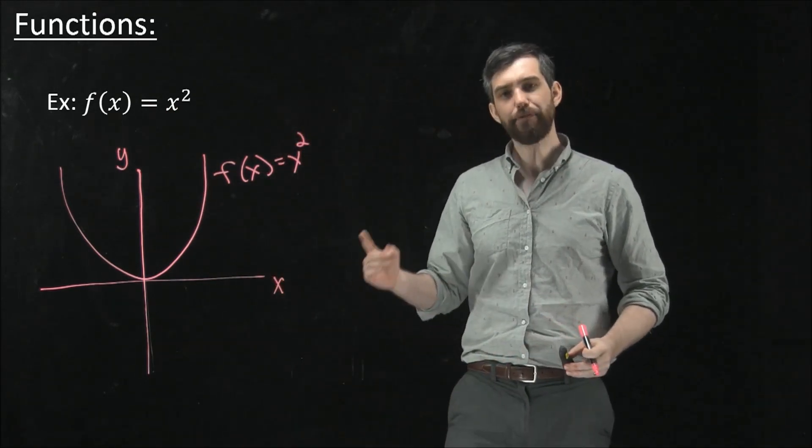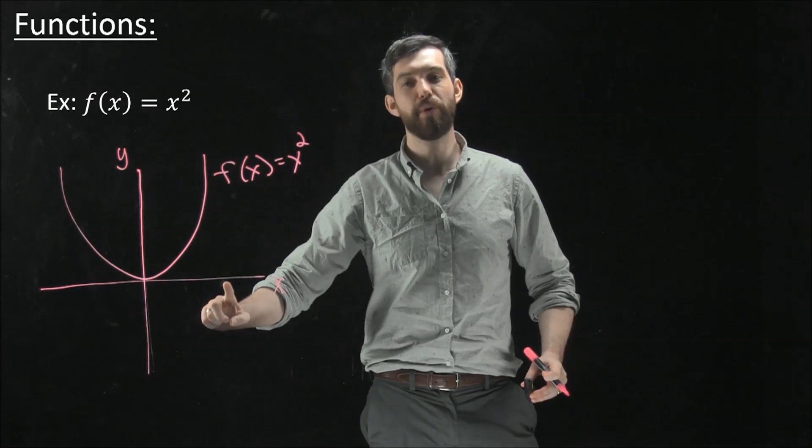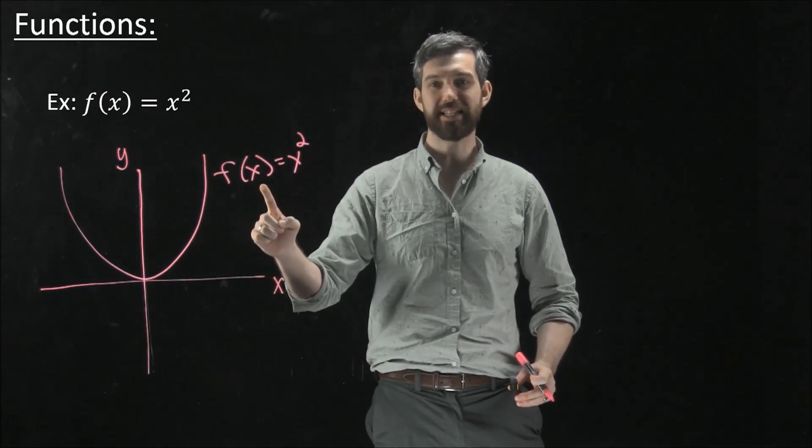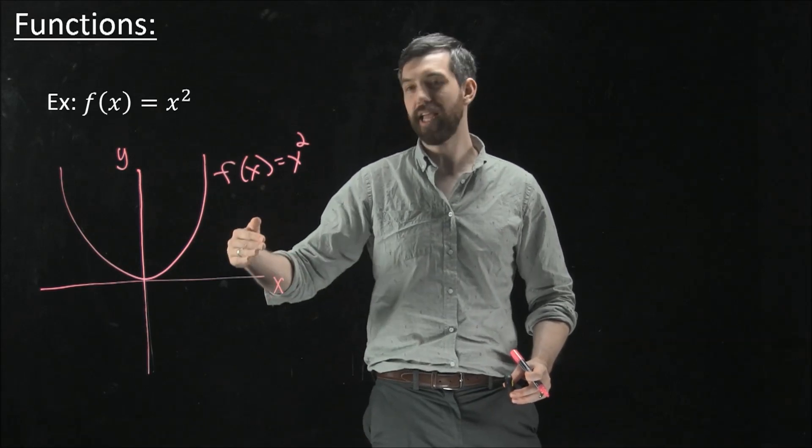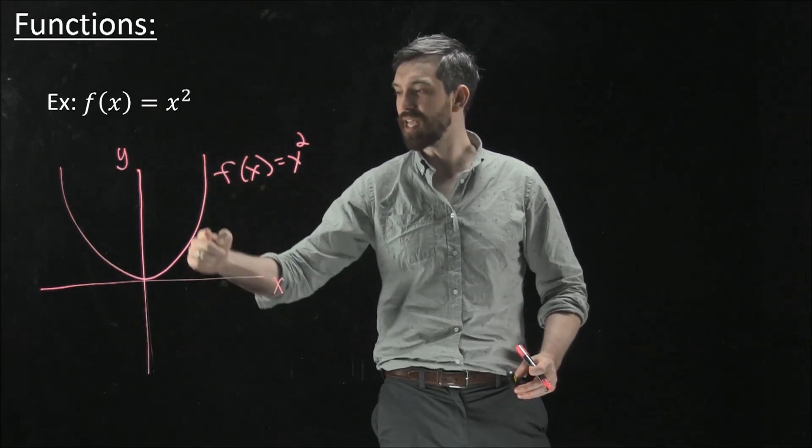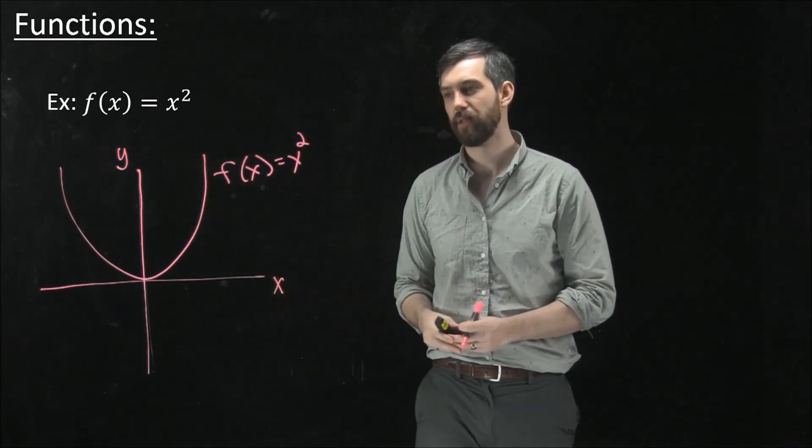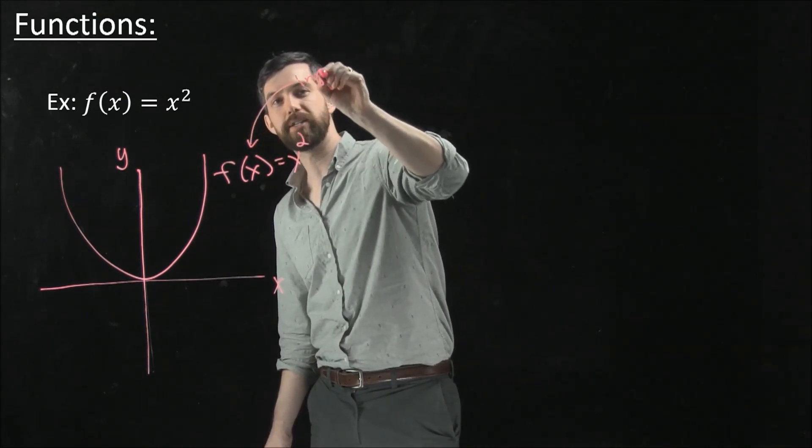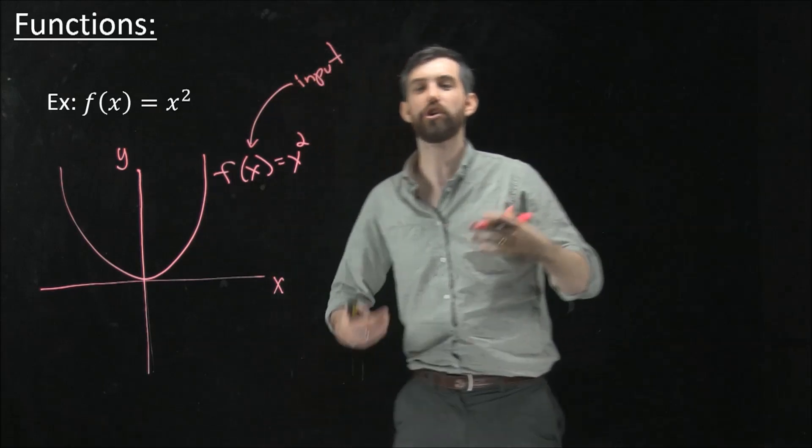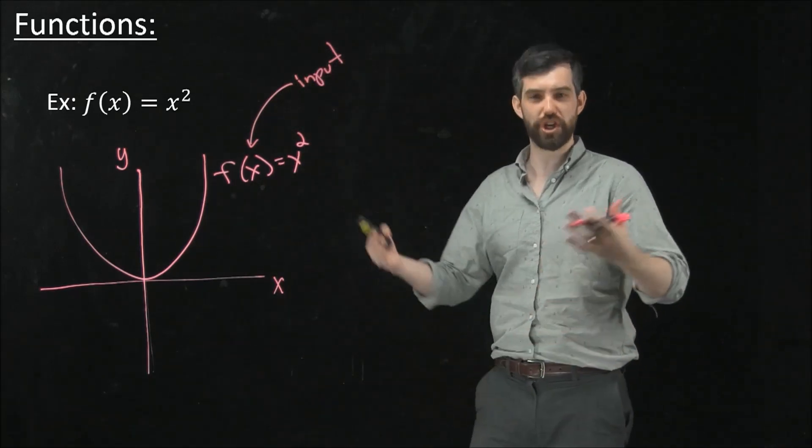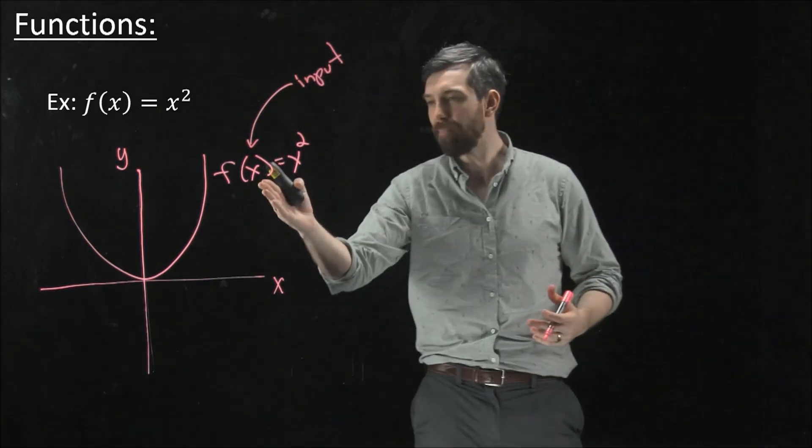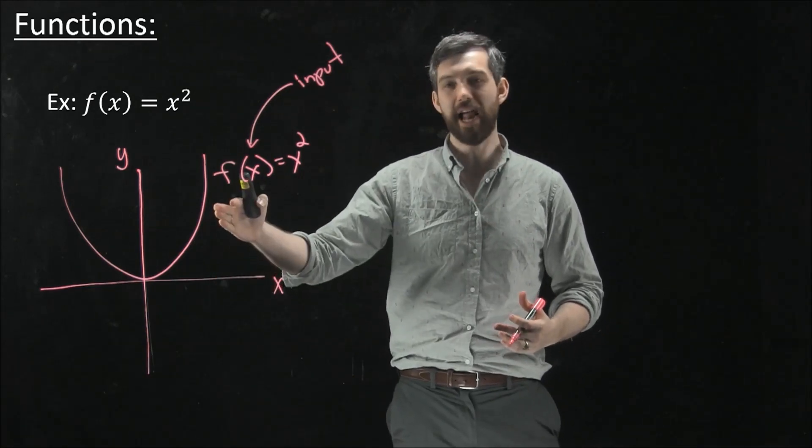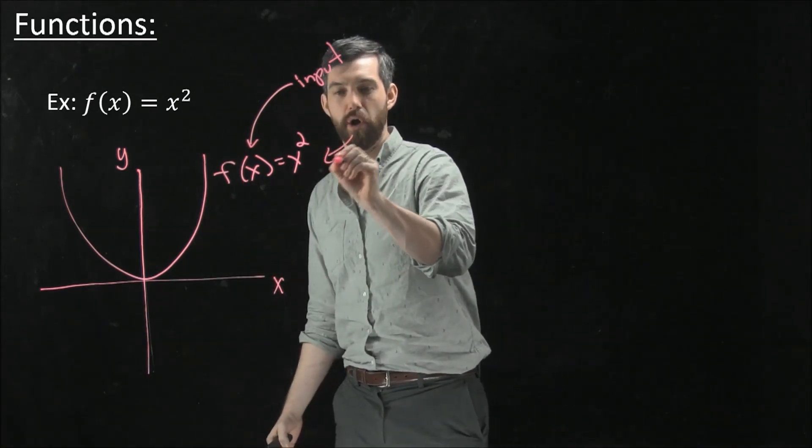And for every input value x, you think of x as going as an input to this function, it spits out some particular height here. In other words, your x is an input, and that goes into this function machine. And then it gets squared, and then it spits it out as an output over here.